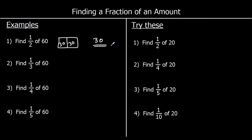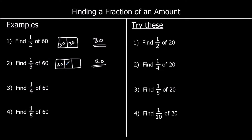For question 2, find one third of 60. We're splitting 60 up into three bits now. So if we've got three equal bits, how big is each one to make 60? 60 divided by 3 is 20. So one third is 20.